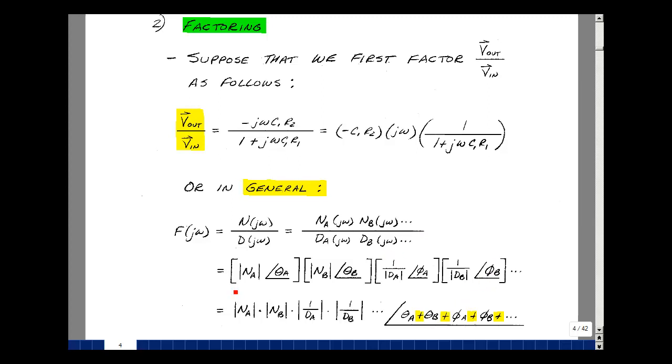What's interesting is that the overall magnitude is the product of all the magnitudes, and the overall angle is the sum of the angles. So if we could sketch these individual terms by inspection, then the overall transfer function's angle is the sum of these terms.